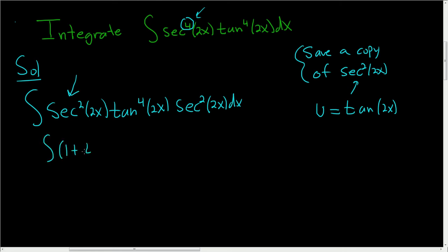Secant squared is 1 plus tangent squared of 2x. Just using the identity, secant squared is 1 plus tangent squared of 2x, and this is tangent to the fourth power of 2x, and then here we have the secant function again being squared dx. At this point it's better to just make the substitution.